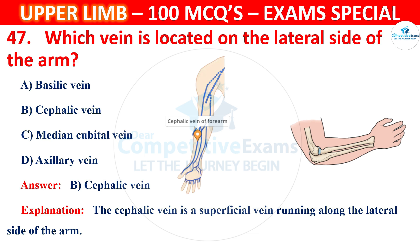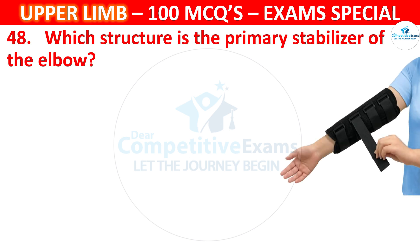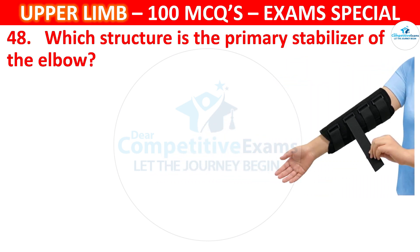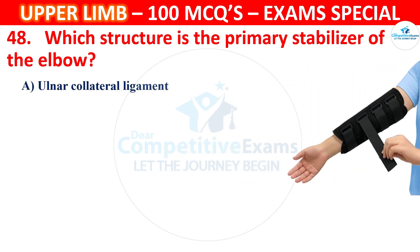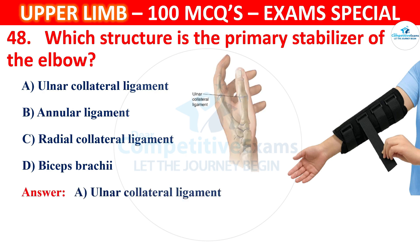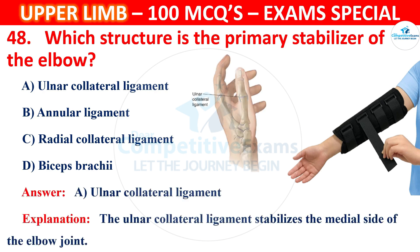Question number 48: Which structure is the primary stabilizer of the elbow? Options: ulnar collateral ligament, annular ligament, radial collateral ligament, or biceps brachii. The correct answer is A, ulnar collateral ligament. The ulnar collateral ligament stabilizes the medial side of the elbow joint.